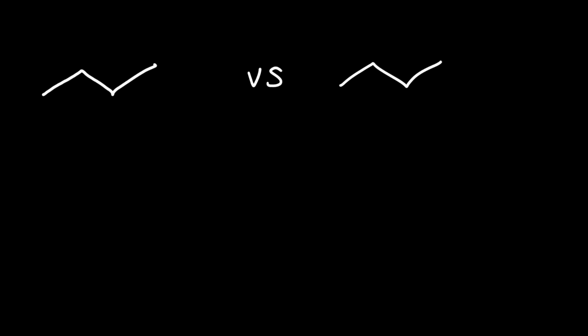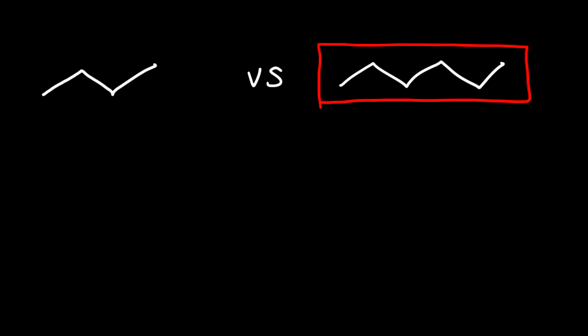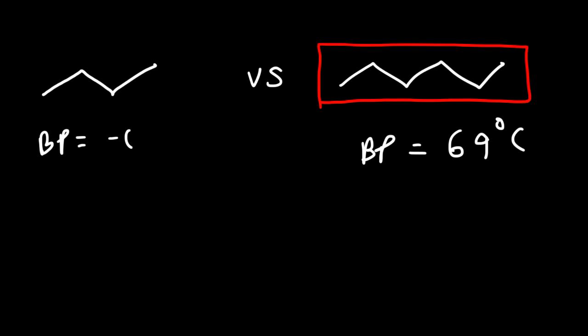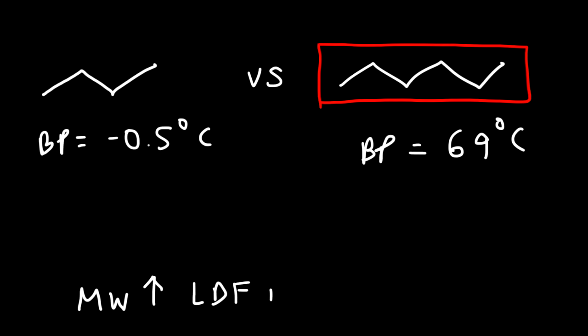In this lesson we're going to talk about the boiling point of organic compounds. Which molecule has a higher boiling point — butane or hexane? The answer is hexane. Hexane has a boiling point of about 69 degrees Celsius and butane has a boiling point of negative 0.5 degrees Celsius. Hexane has a higher molecular weight, and as you increase the molecular weight of a nonpolar molecule, the London dispersion forces or van der Waals forces will increase.